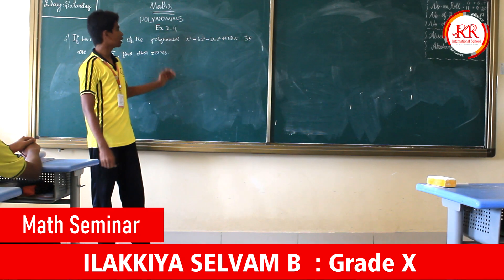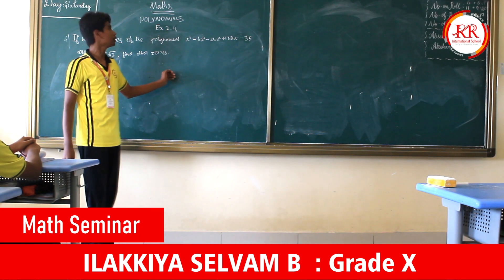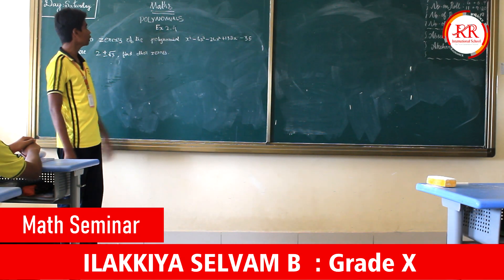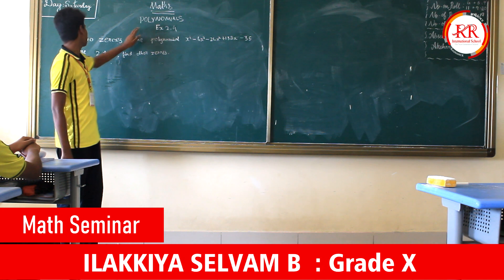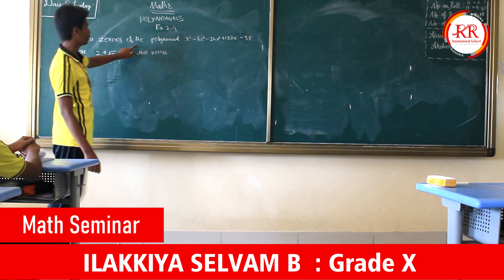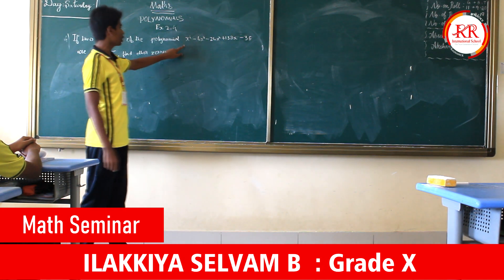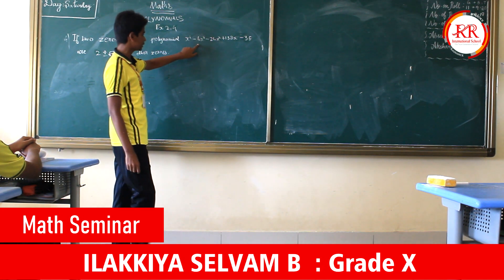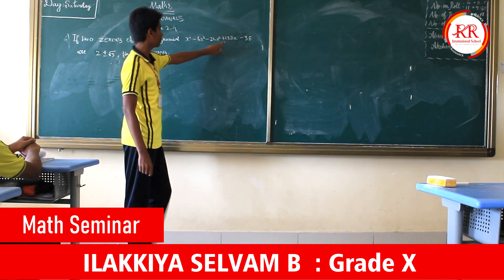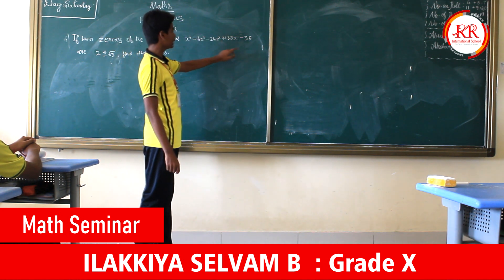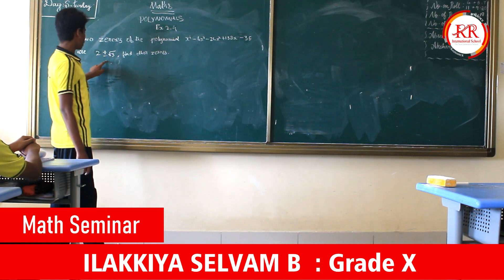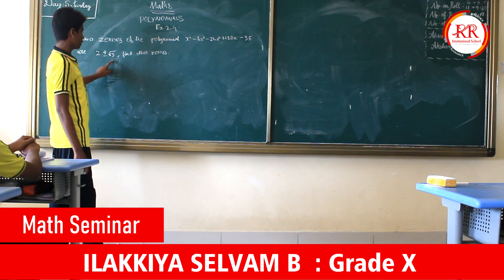Good morning everyone. Today we are going to discuss the 4th sum in exercise 2.4, chapter on polynomials. If 2 zeros of the polynomial x⁴ minus 6x³ minus 26x² plus 138x minus 35 are 2 plus or minus root 3, find the other zeros.